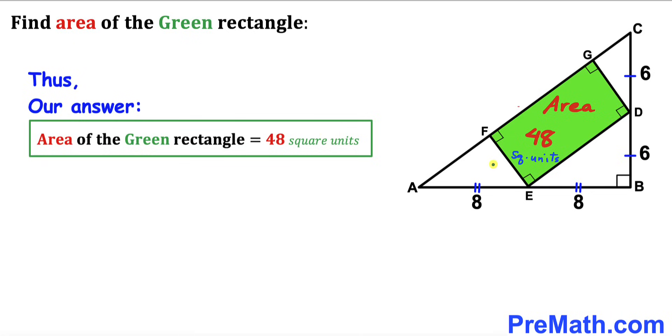The area of this green rectangle EDGF turns out to be 48 square units. That's our final answer.